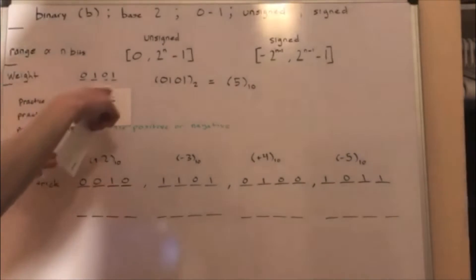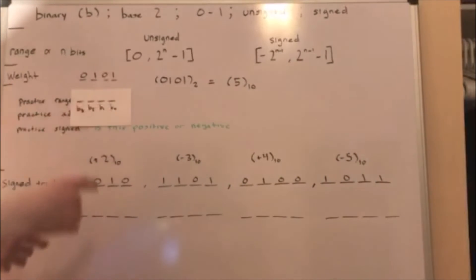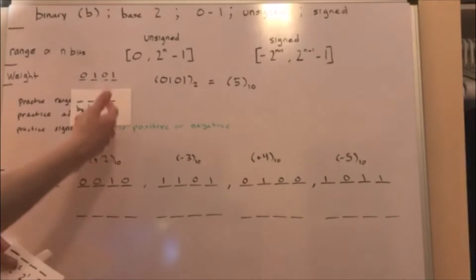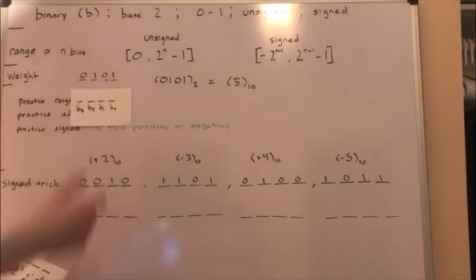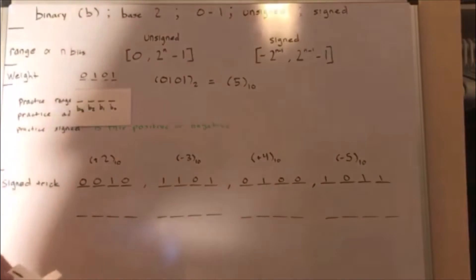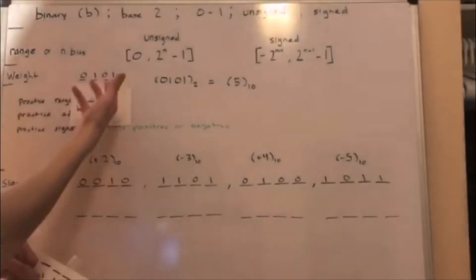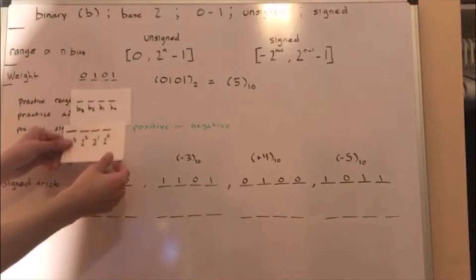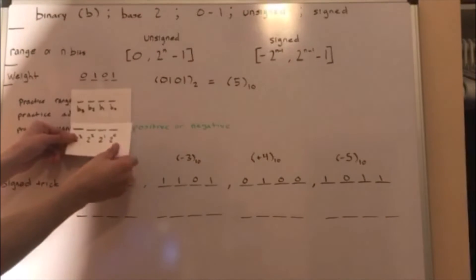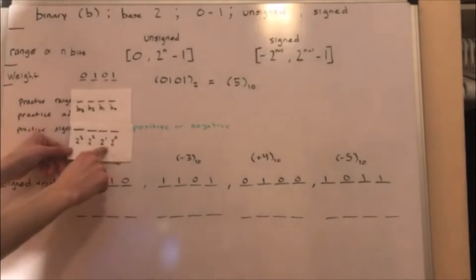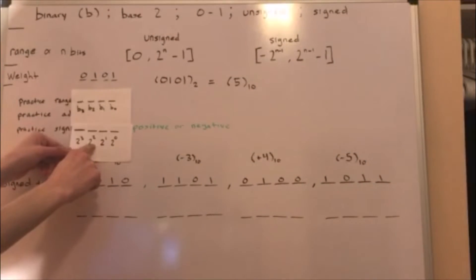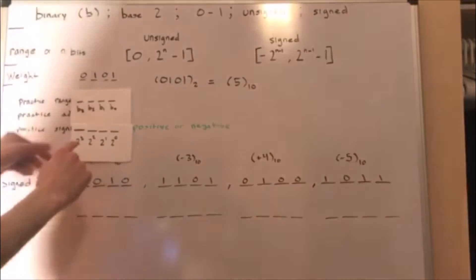Every bit has a position: 0, 1, 2, and 3. Every position has a weight: 2 to the 0, 2 to the 1, 2 to the 2, and 2 to the 3.